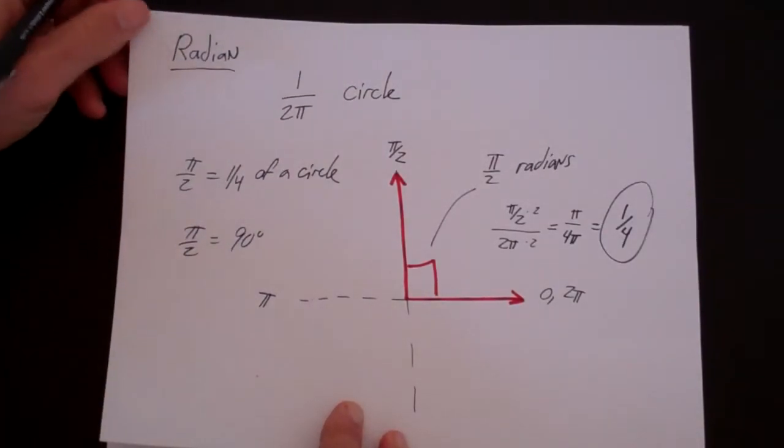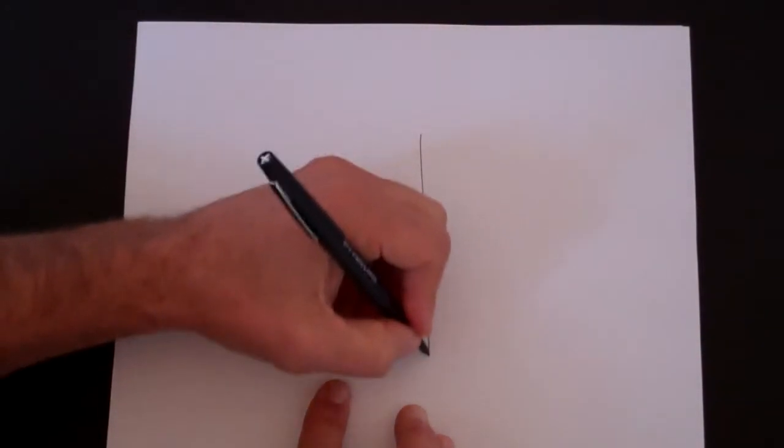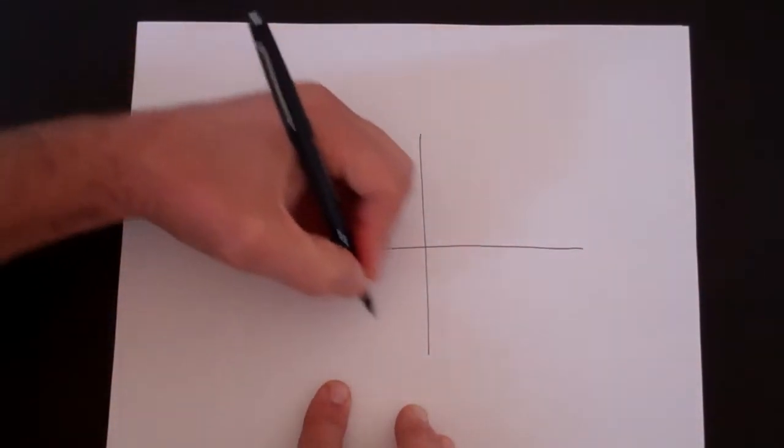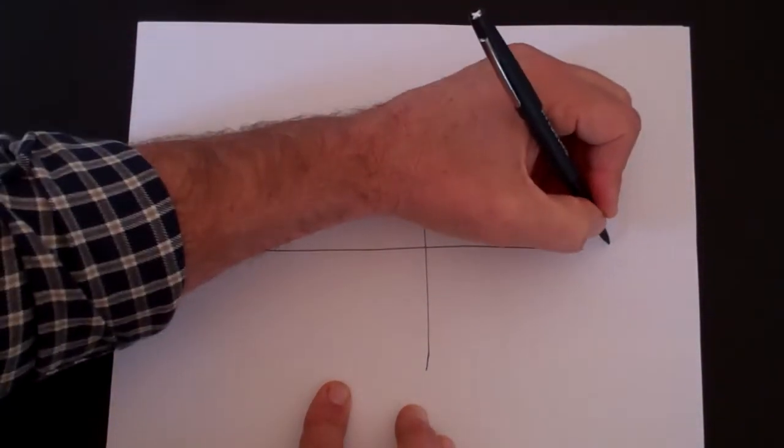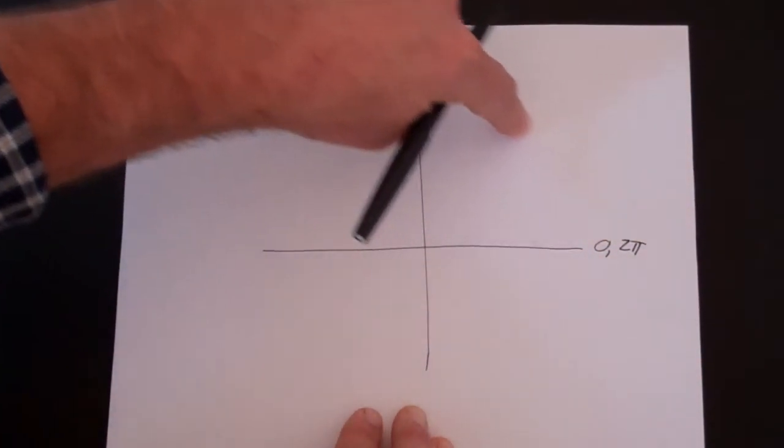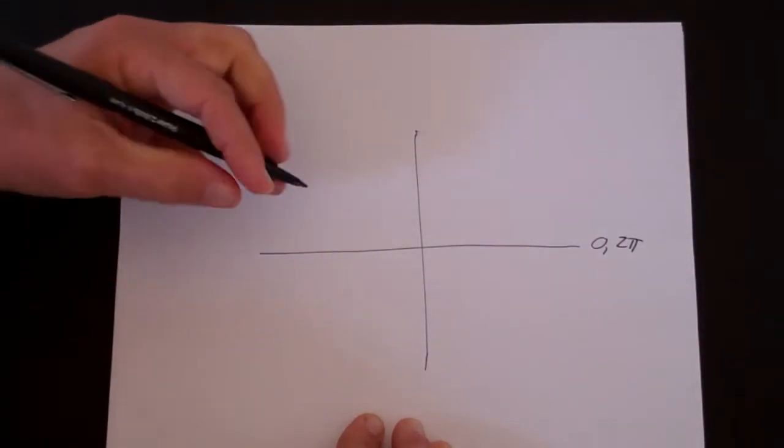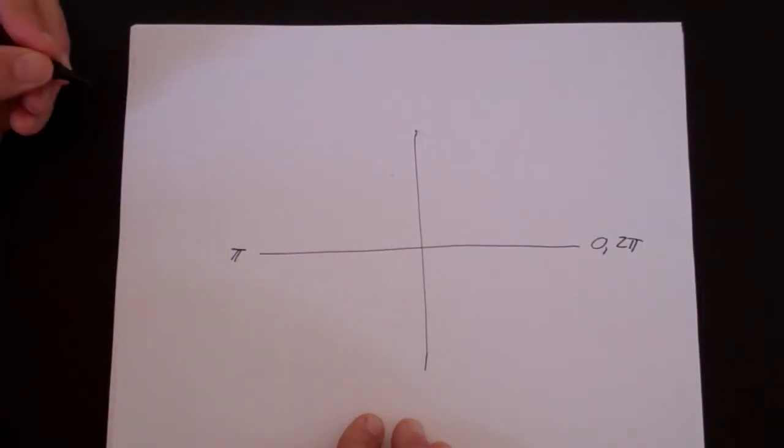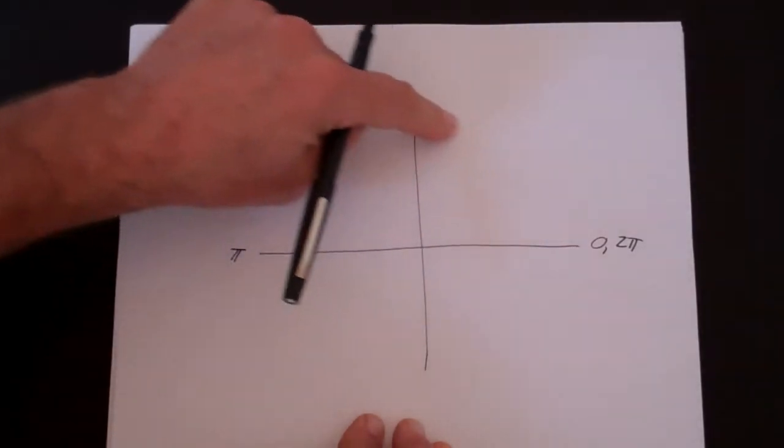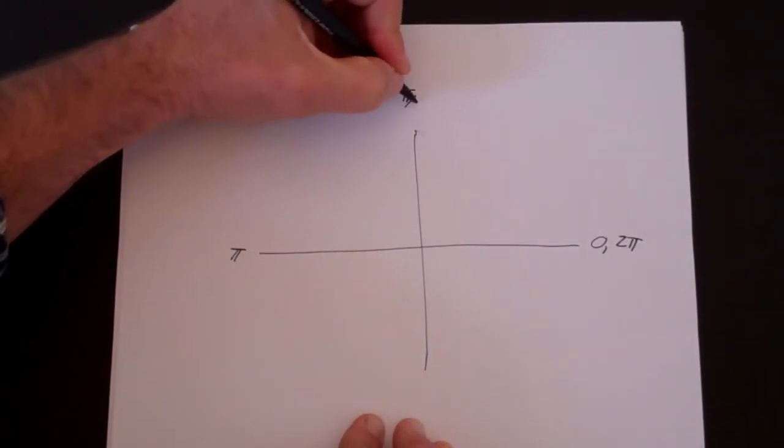So the first thing that you're going to want to do is you're going to want to memorize various radian measures. So let's take a circle and divide it into four parts. This is both 0 and 2π, because you start here at 0, but if you go all the way around, it's 2π. If you go halfway, it's π. If you went half of halfway, it would be 1 half of π, so that's π over 2. That's what we saw before.